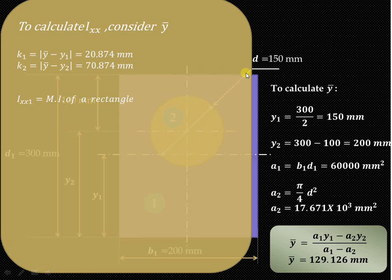Ixx1 is the moment of inertia of the first section, that is a rectangle of width 200 mm and depth 300 mm. Applying the parallel axis theorem, it is (1/12)b1d1³ + a1k1². Substitute b1 = 200, d1 = 300, a1 = 60,000, and k1 = 20.874. You get the value of Ixx1 as 476.143 × 10⁶ mm⁴.